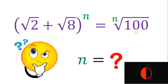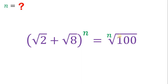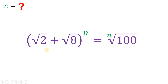Now let's answer this question together. Our goal here is to solve for the real value of n. We have square root of 2 plus square root of 8, raised to n, equals the nth root of 100. The first thing we need to do is to simplify the left-hand side until it becomes a single number.